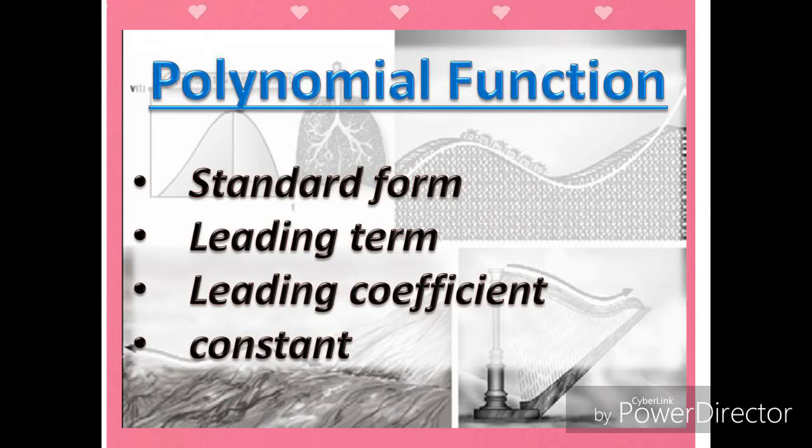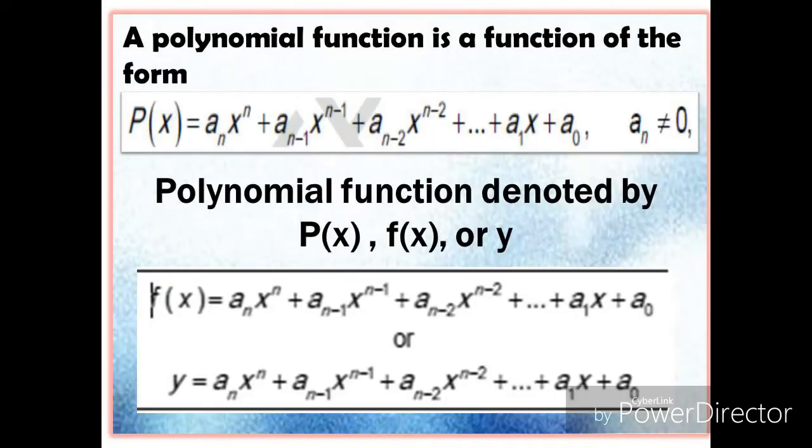In this lesson we're going to find the standard form, the leading term, the leading coefficient, and the constant of a polynomial function. A polynomial function is a function of the form P of X equals a sub n times X raised to n plus a sub n minus 1 times X raised to n minus 1, and so on, where a sub 0 is not equal to 0.